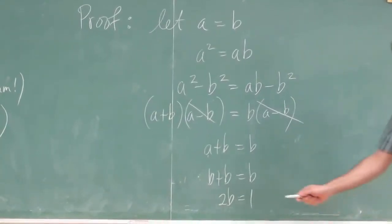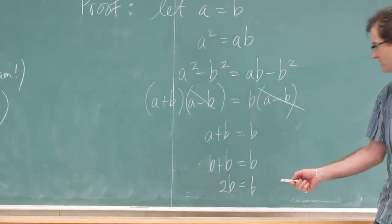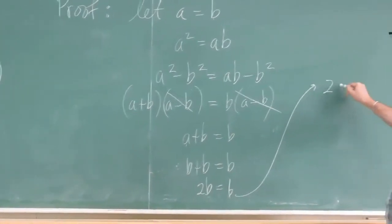2B or not 2B. This is not 2B. This is just B. Divide both sides by B, and you get 2 equals 1.